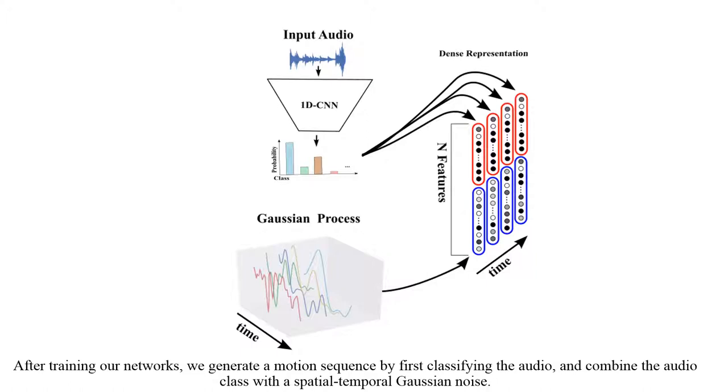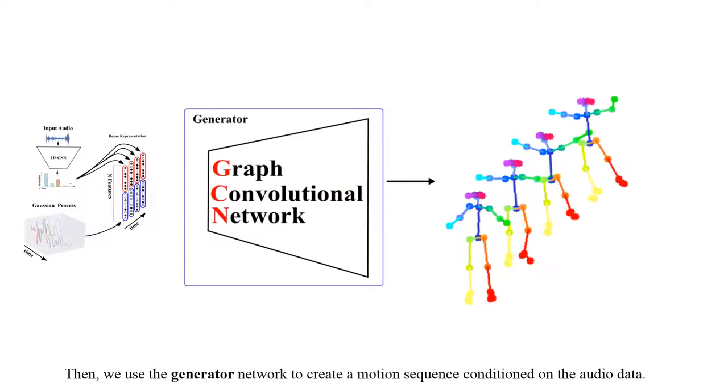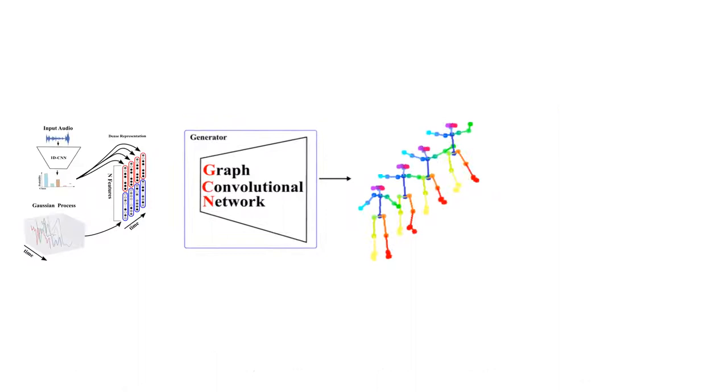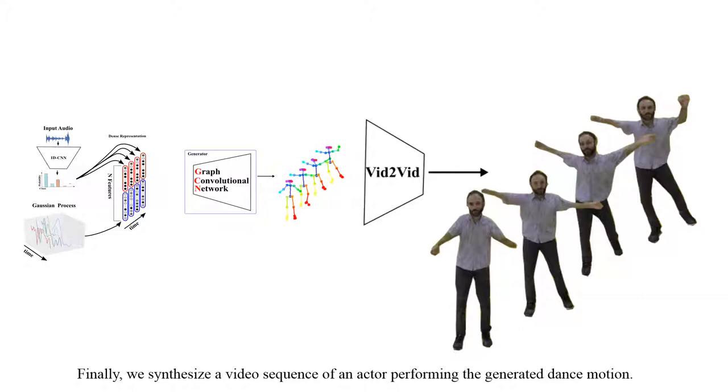After training our networks, we generate a motion sequence by first classifying the audio and combining the audio class with a spatial-temporal Gaussian noise. Then we use the generator network to create a motion sequence conditioned on the audio data. Finally, we synthesize a video sequence of an actor performing the generated dance motion.